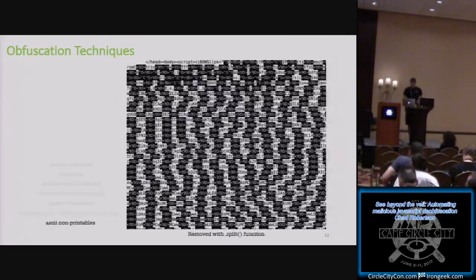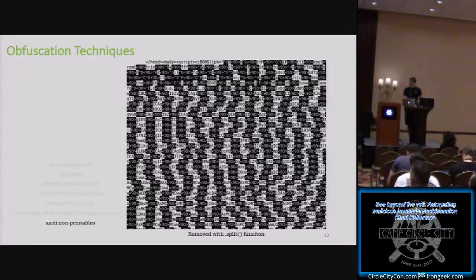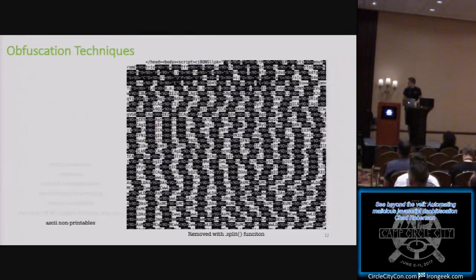Unicode encoding changes characters into hex or unicode representations. The Rig landing page script we're examining has a large data blob full of junk — you can see the ASCII non-printable character 0x9D repeating throughout, making it harder to understand what that data blob is doing. In the JavaScript, this is removed using the split function, which we can duplicate in Python.